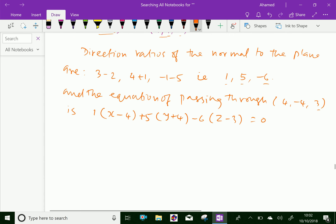So which gives by simplification x minus 4 plus 5y plus 20 minus 6z plus 18 equals 0. Which gives x plus 5y minus 6z plus 34 equals 0. This is the required equation of the plane.